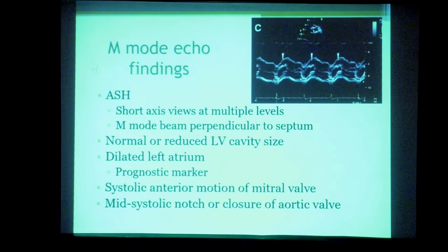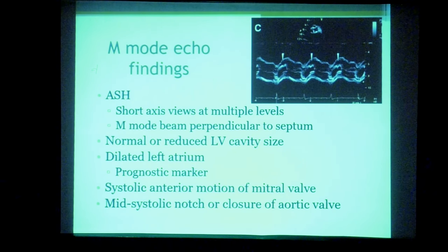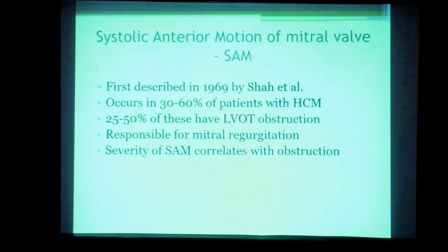Moving to the echo assessment proper of HCM, starting with M-mode. Classical M-mode features include asymmetrical hypertrophy measured at multiple levels, preferably in short axis views to avoid tangential errors — in the PLAX view, if the cursor is not perpendicular to the myocardium, measurements can be falsely elevated or reduced. The LV cavity size is either normal or reduced, the left atrium is dilated (a prognostic marker), and there is systolic anterior motion of the mitral valve. A mid-systolic notch in the aortic valve is also seen on M-mode.